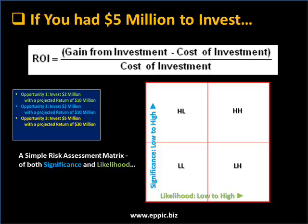In the bottom left quadrant, we have low significant risk and a low likelihood. Up in the top right, we have a risk that is high significance and highly likely. We need to be looking at each Opportunity 1, 2, and 3 to add to our ROI view in terms of what we should do with our $5 million to invest. Should we put it all into Opportunity 3? It depends on the risks inherent in that, and the significance and likelihood of those risks. This is a very simplistic example, but it demonstrates that it's not so simple as doing the math of ROI — other factors need to be taken into consideration.